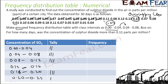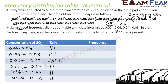0.06 will be here. 0.18 — big number, it will be here. 0.20 — a bigger number, it will be here. 0.11 will be here. 0.08 will be here. 0.12 will be here. 0.13 will be here. 0.22 is a very high number, it will be here. 0.07 will be here. 0.08 will not be in this class, it will be in this class. 0.01 will be here.